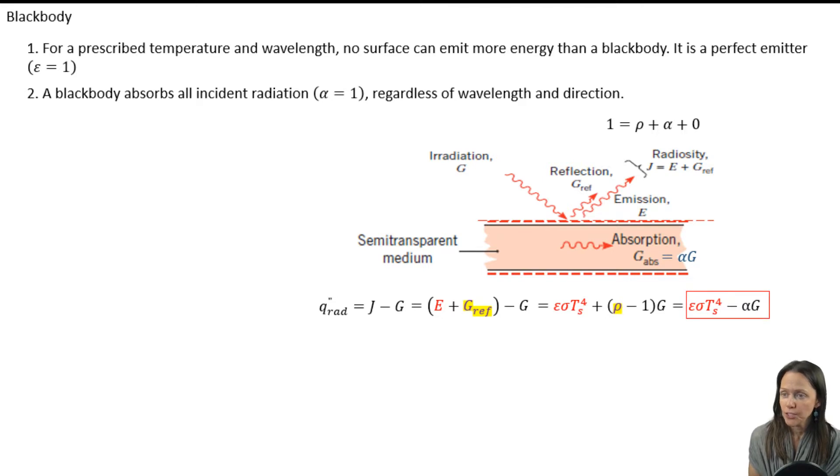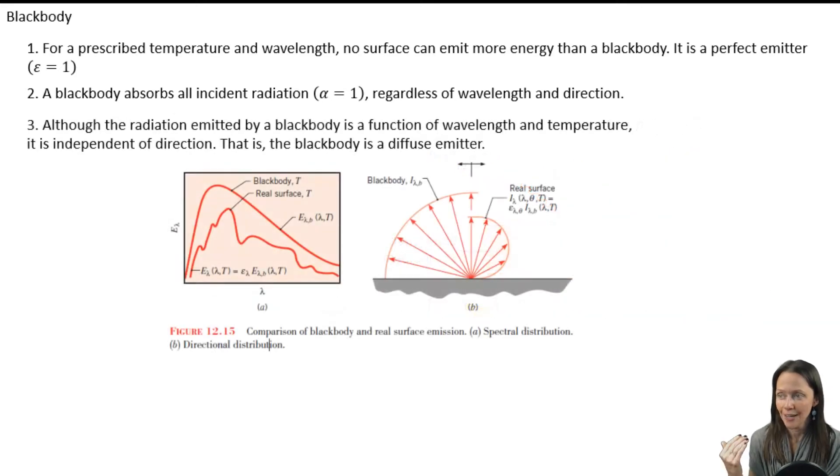All right, so we get to the third characteristic of a black body. Although radiation emitted by a black body is a function of wavelength and temperature, it's independent of direction. That is, the body is a diffuse emitter. So a diffuse emitter radiates equally in all directions, as you can see highlighted here.